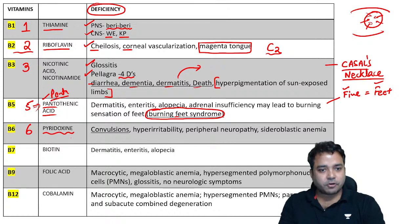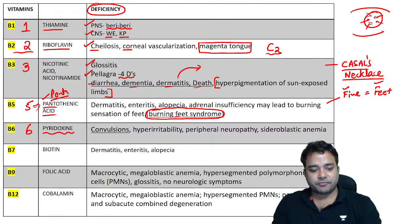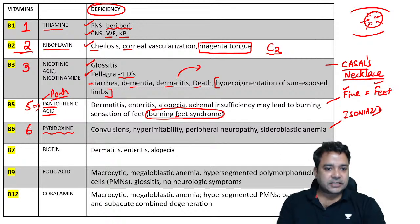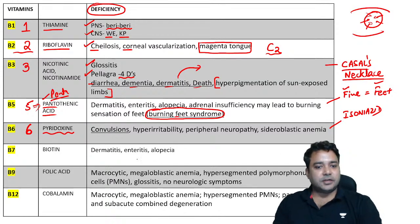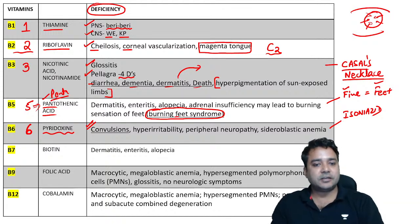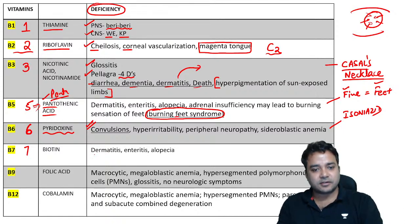Pyridoxine (B6) deficiency leads to convulsions because B6 is involved in GABA production. Without GABA, lots of excitatory (glutaminergic) activity occurs. B7 (biotin) deficiency is very rarely seen — it can lead to dermatitis, enteritis, and alopecia. Folic acid is vitamin B9 and cobalamin is vitamin B12.